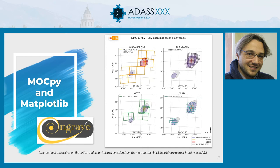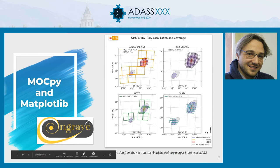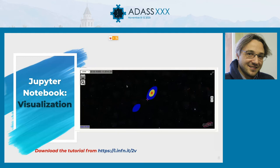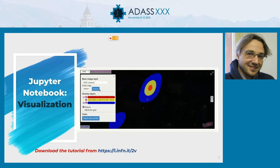Here is a practical application from the ENGRAVE collaboration using mockpy and matplotlib in Python. The plot shows the EM follow-up from ATLAS, VST, Pan-STARRS, GOTO, and VISTA telescopes. You can visualize the reference sky map at the 90% and 10% confidence levels, and the initial BAYESTAR sky map in light gray — it's the coverage of GW event S190814bv, published by the ENGRAVE collaboration in Astronomy & Astrophysics.